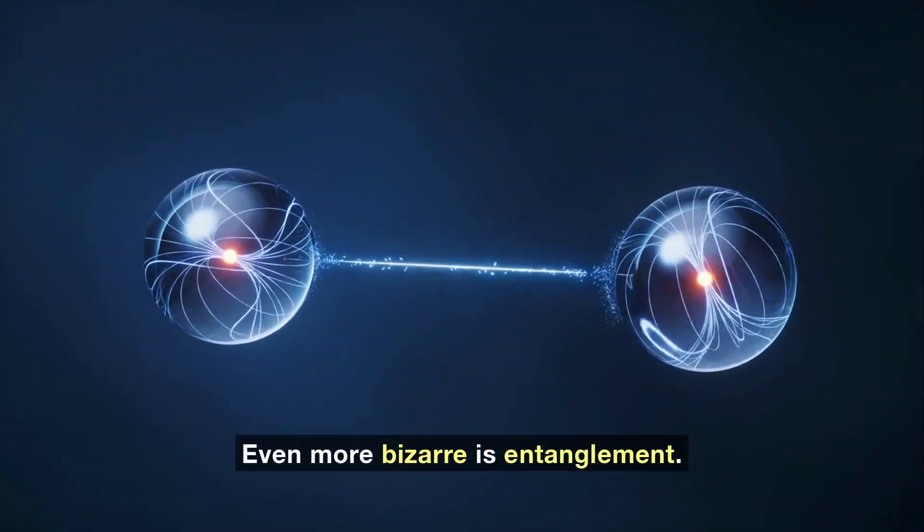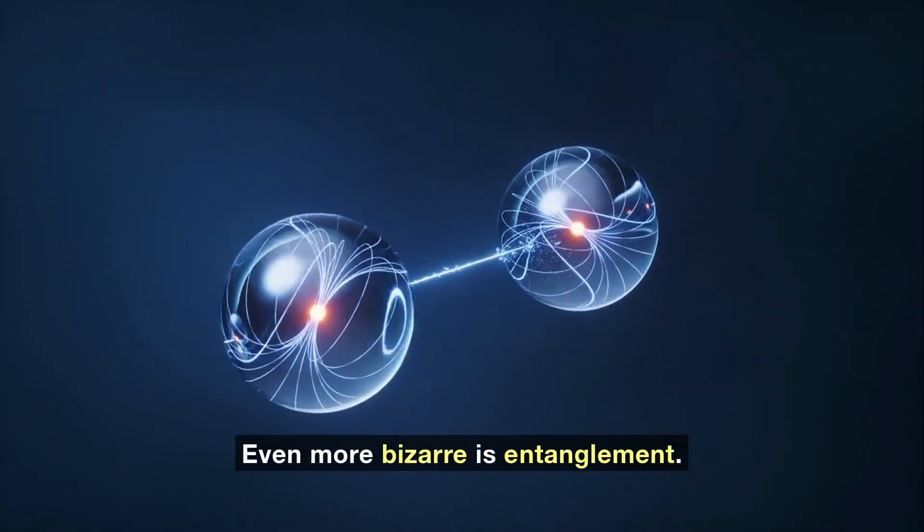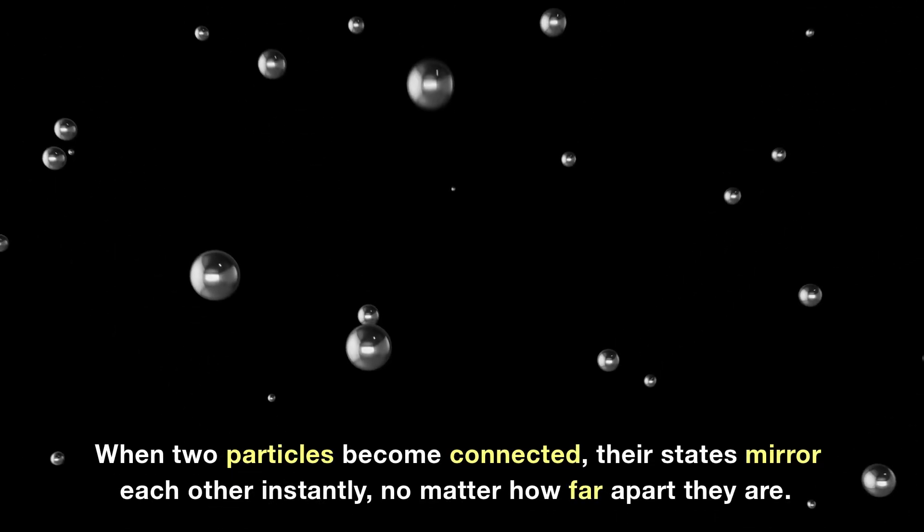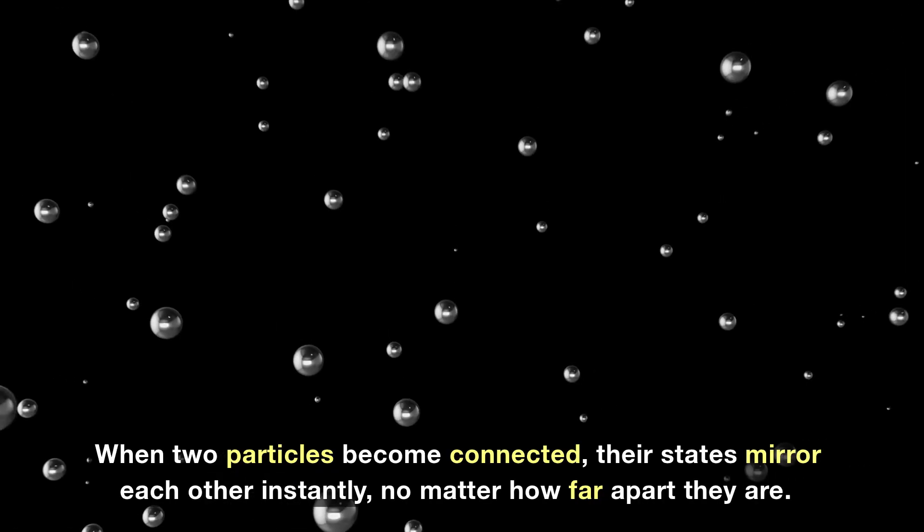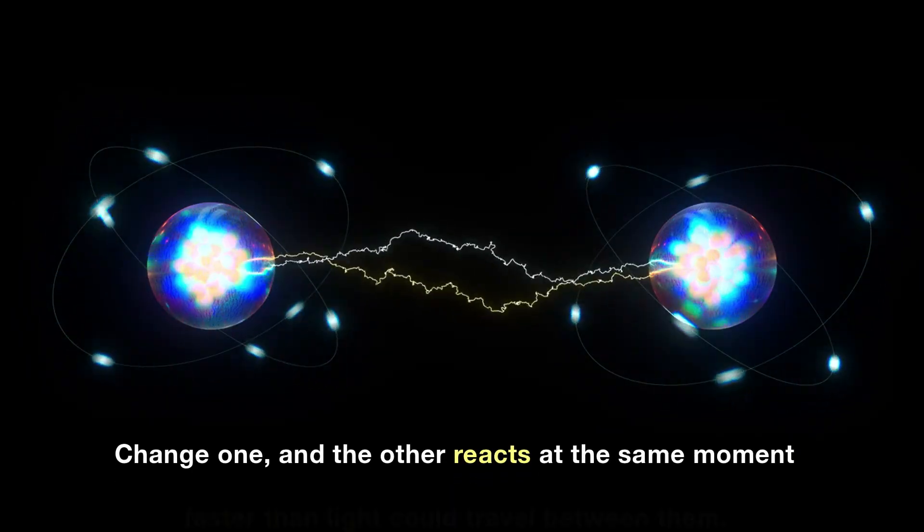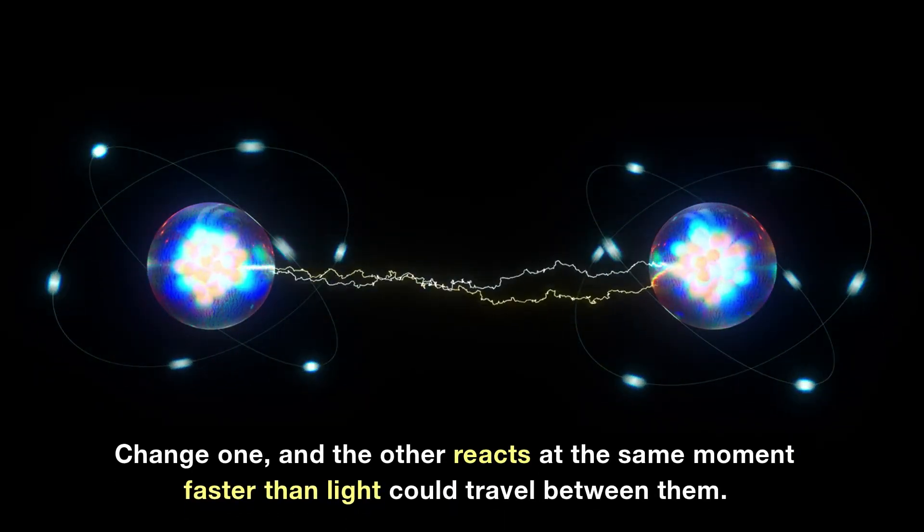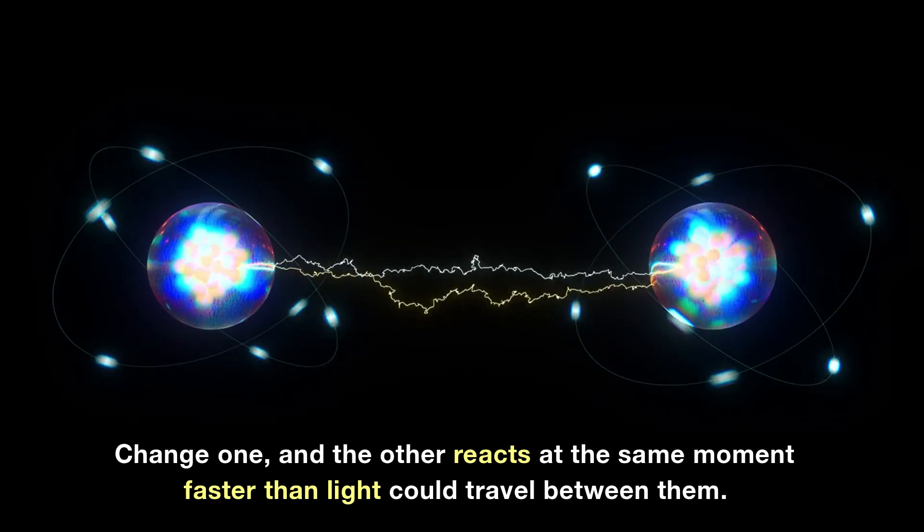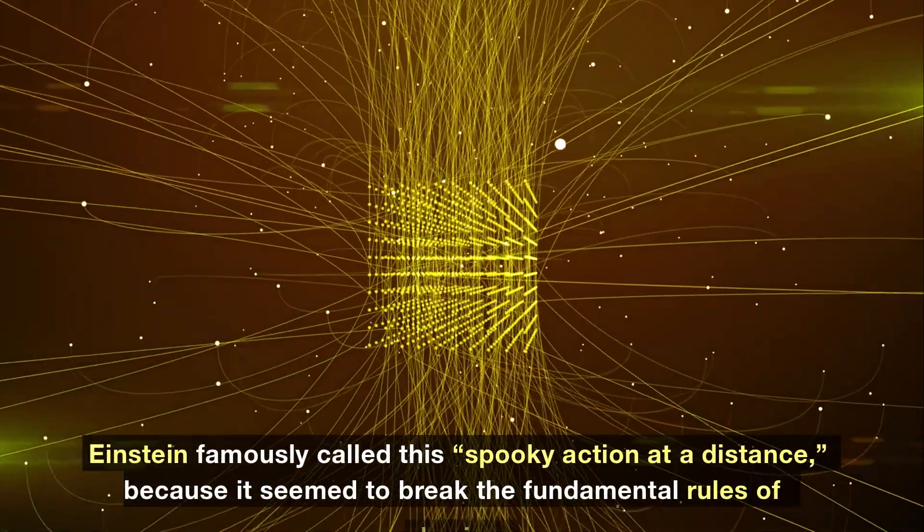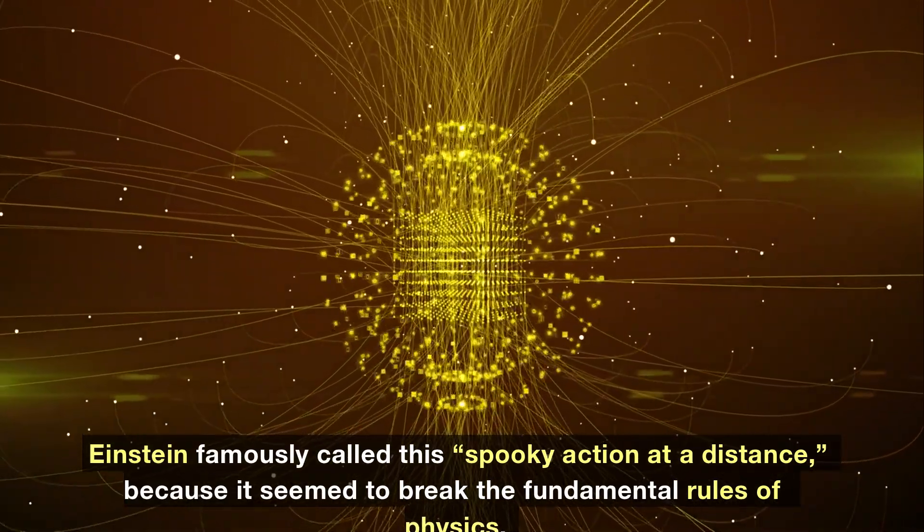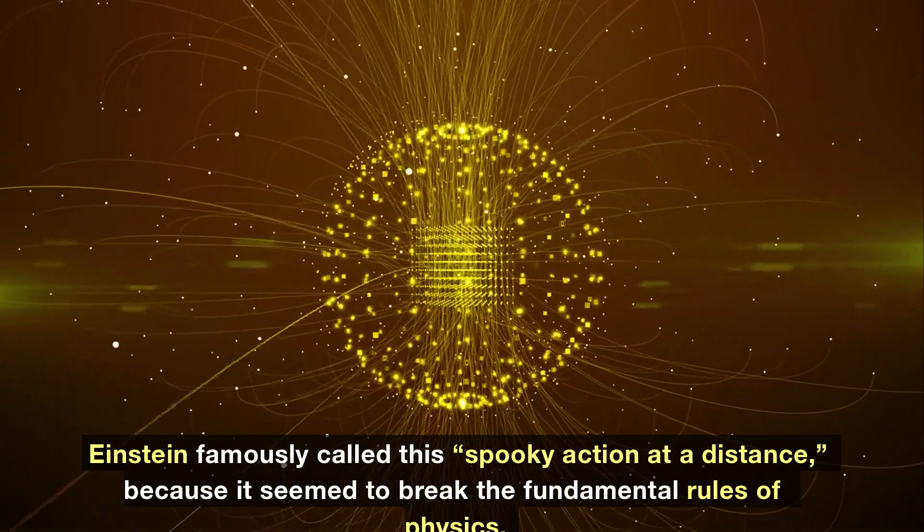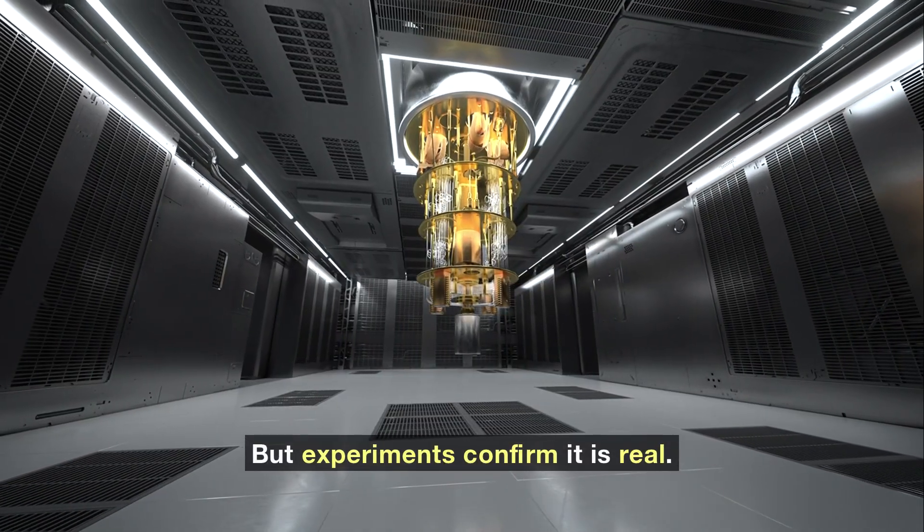Even more bizarre is entanglement. When two particles become connected, their states mirror each other instantly, no matter how far apart they are. Change one and the other reacts at the same moment, faster than light could travel between them. Einstein famously called this spooky action at a distance because it seemed to break the fundamental rules of physics. But experiments confirm it is real.